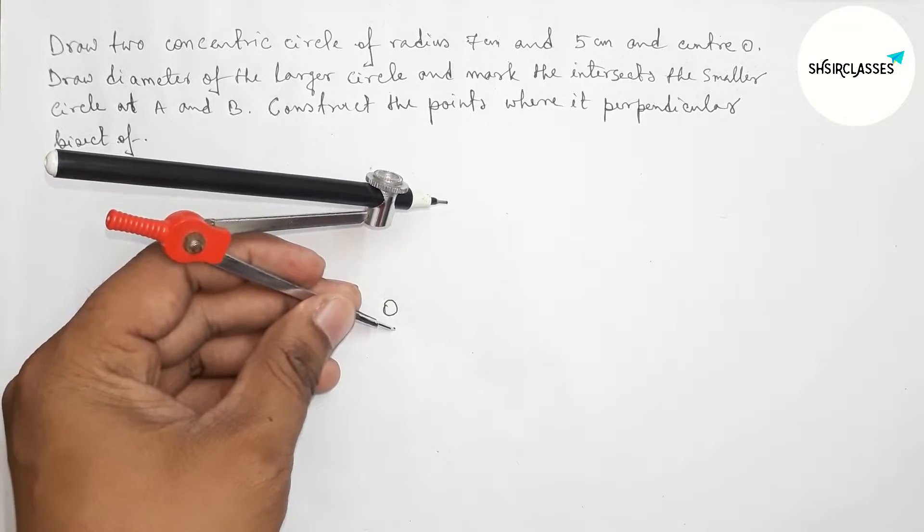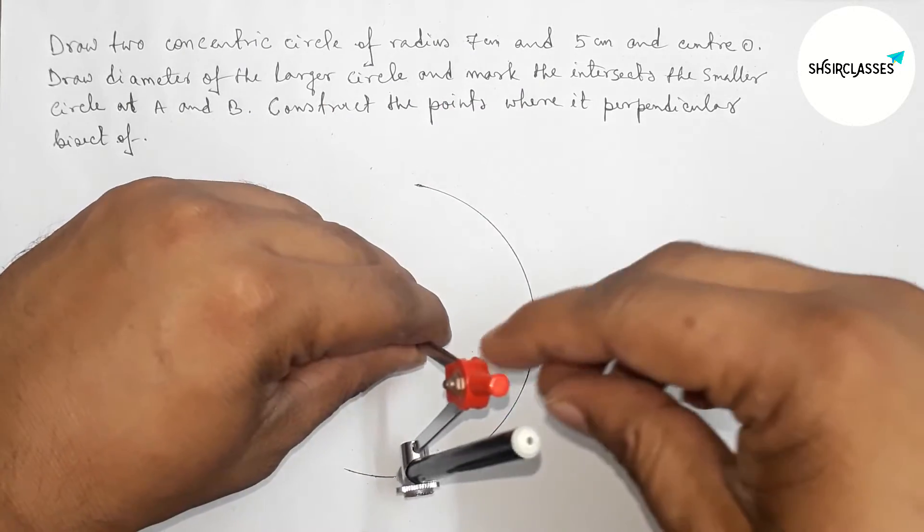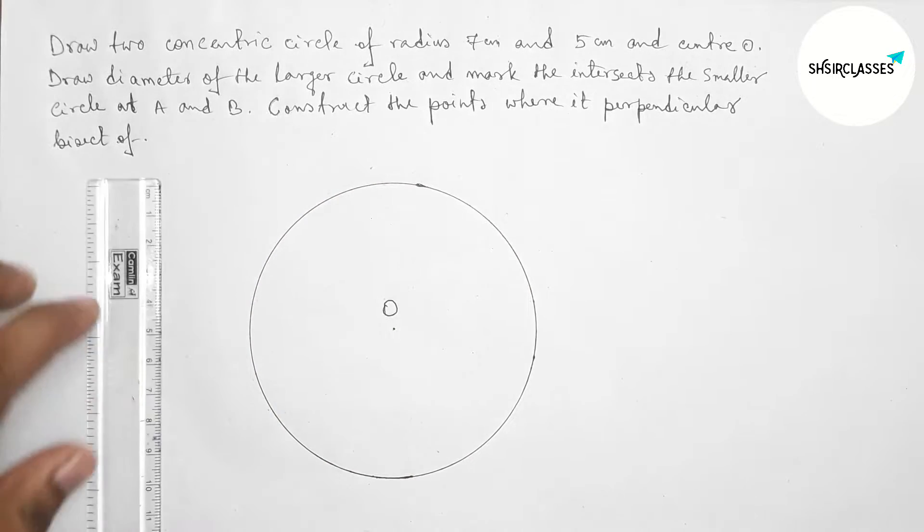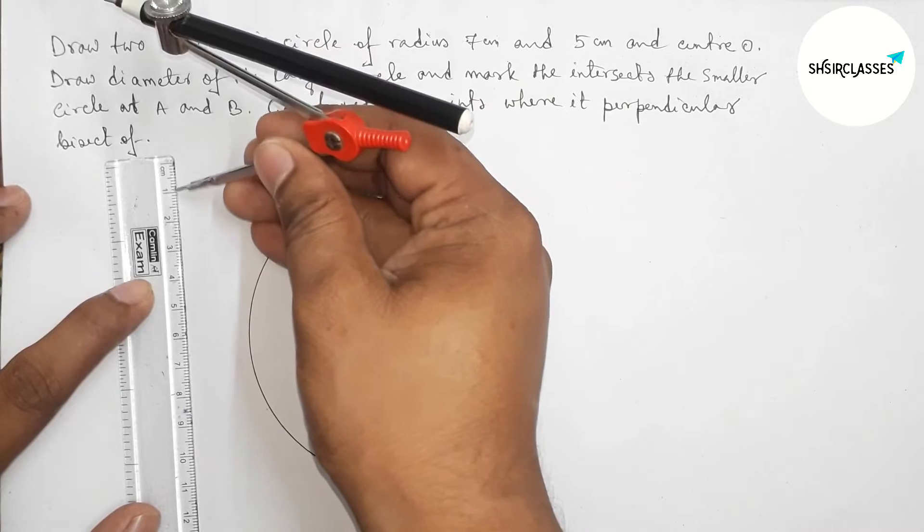Taking point center O here. Now drawing a circle of radius 5 centimeters. Now taking radius 7 centimeters with the help of compass and scale.